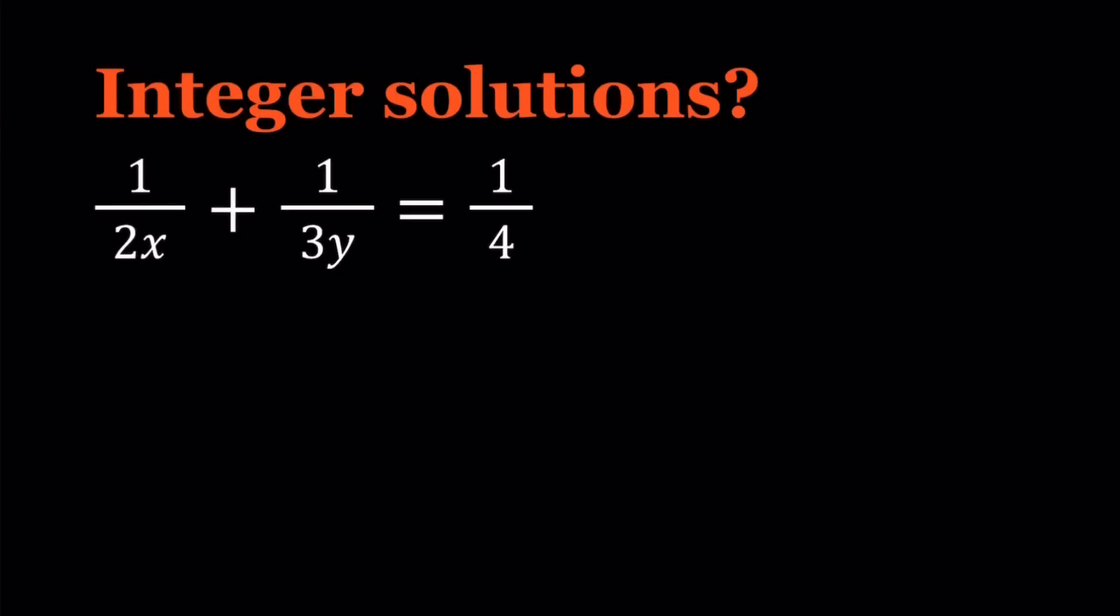Hello everyone. In this video we're going to be solving a Diophantine equation from Romania. We have 1 over 2x plus 1 over 3y equals 1 over 4 and we're looking for integer solutions. So let's go ahead and take a look.